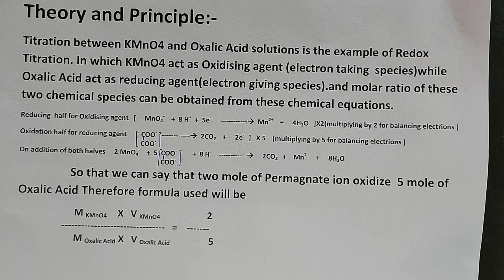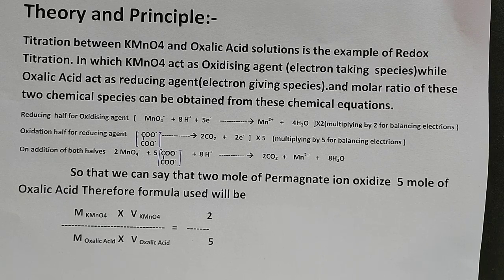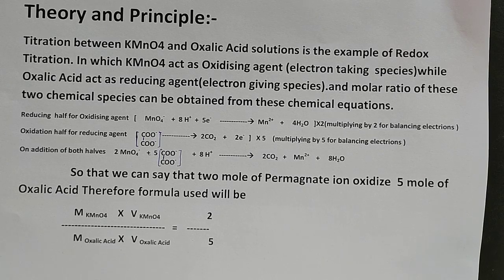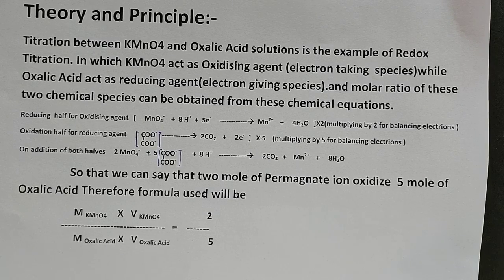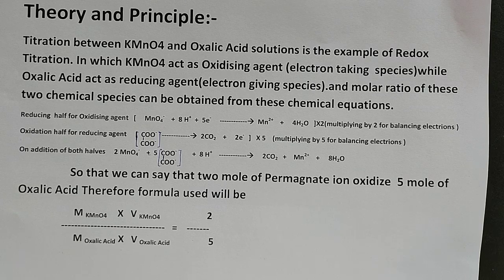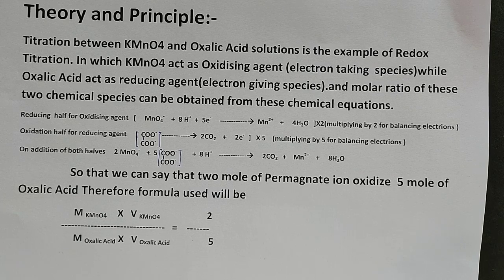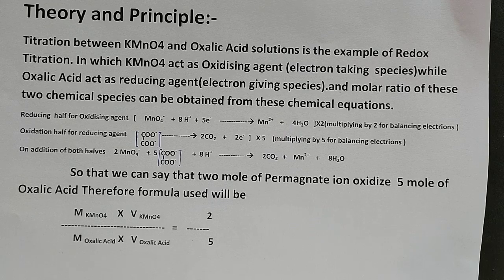The molar ratio of these two chemical species can be obtained by chemical reactions. From these reactions we see that 2 moles of potassium permanganate react with 5 moles of oxalic acid.